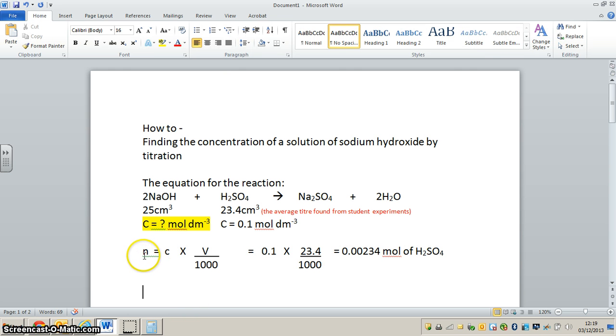Here is our general formula: number of moles equals concentration times volume over 1000. It's over 1000 because we're using cm³, and there are 1000 cm³ in one dm³. We're working out how many moles of sulfuric acid have reacted. Here is the concentration, 0.1 mol.